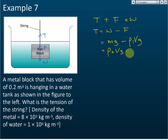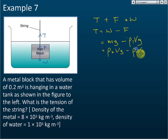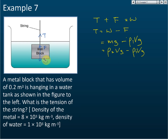So we write: tension equals ρ₂Vg minus ρ₁Vg. The symbol for g is the same because gravitational field strength is the same, and the volume symbol is also the same. The reason the volumes are the same is that this block is fully immersed in water — when a block is fully immersed, the volume of water displaced equals the volume of the block.